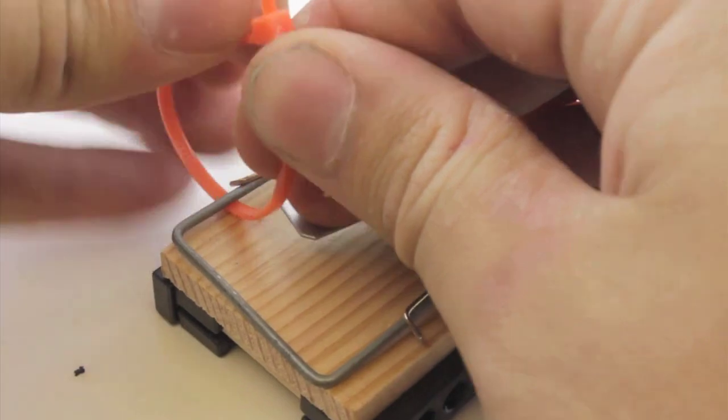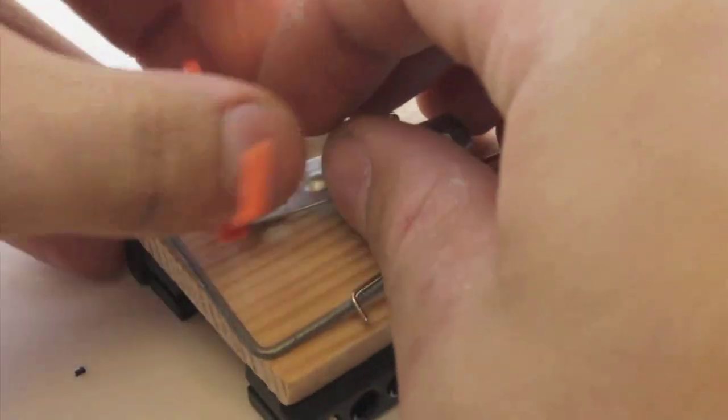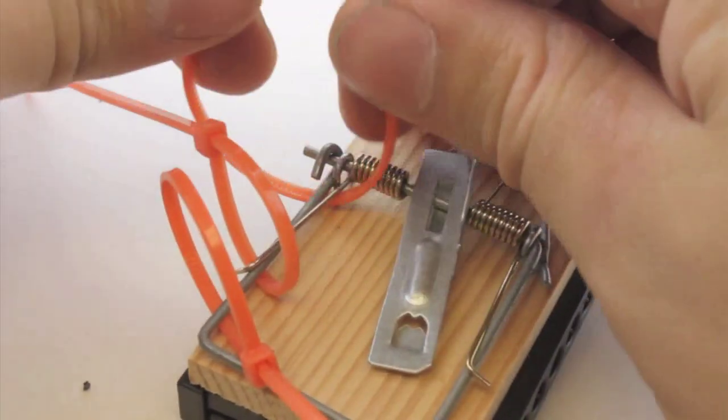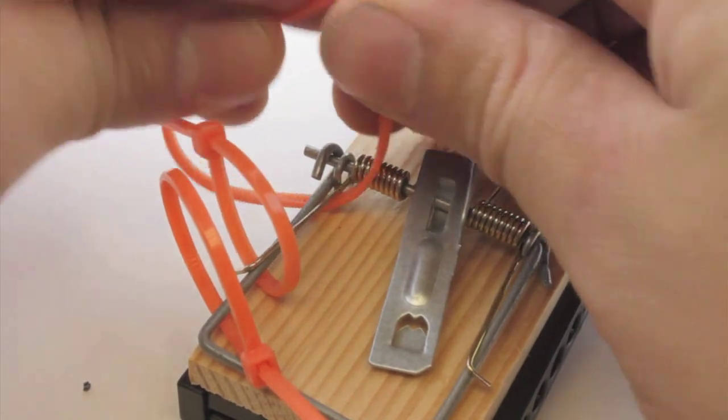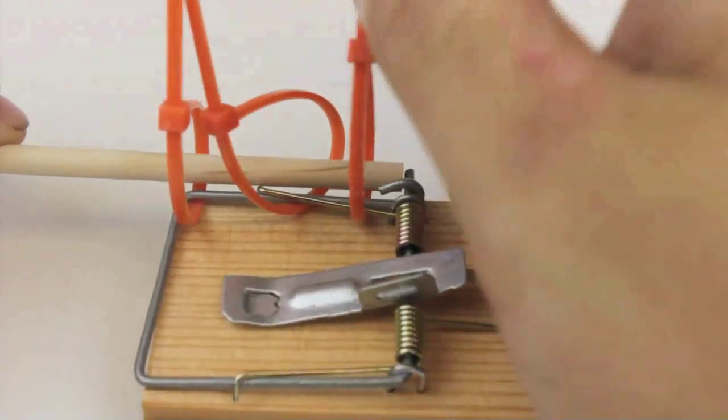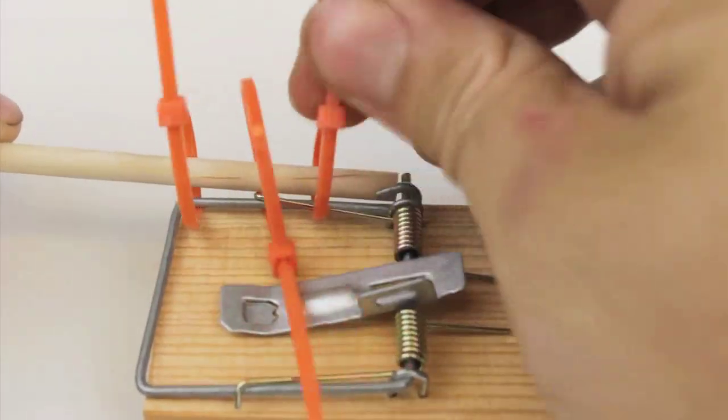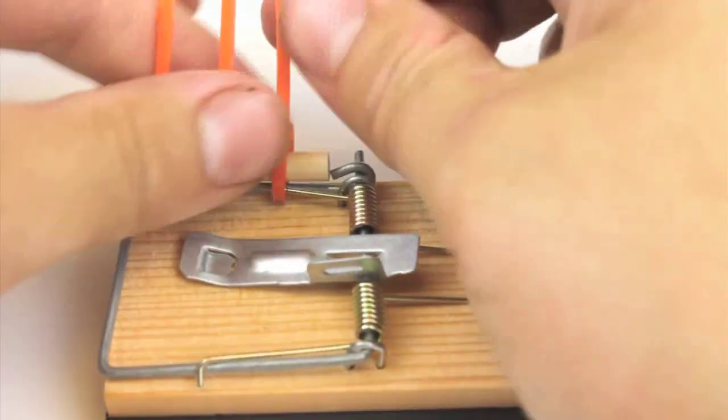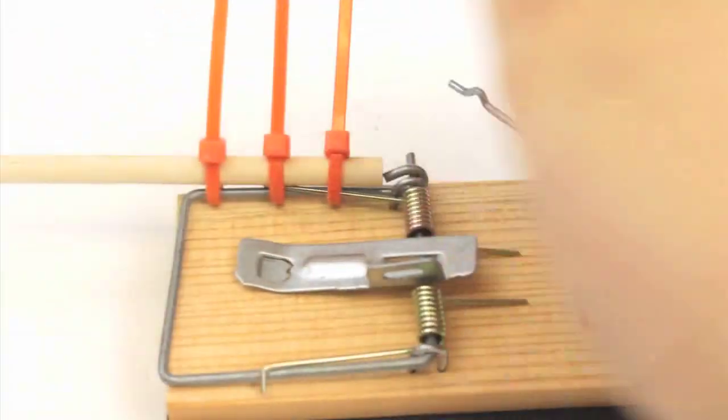Take your cable ties and attach them to the mousetrap lever arm. Slide the dowel into the cable ties and tighten them down. Make sure that your cable ties are tight so that the dowel does not come off.